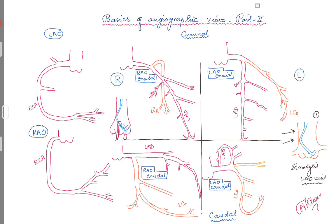Look at picture one here. This is your straight LAO view — your default view where the tech will take you every time you want to engage the coronaries, or when you are done taking images. This is basically the view where your catheter is sitting in the aortic root, the left main is on the left side, and the RCA is coming out from the right side. This is your working view when engaging the coronaries.